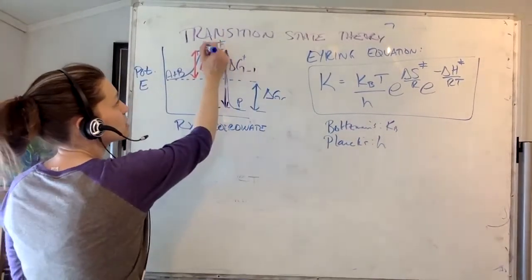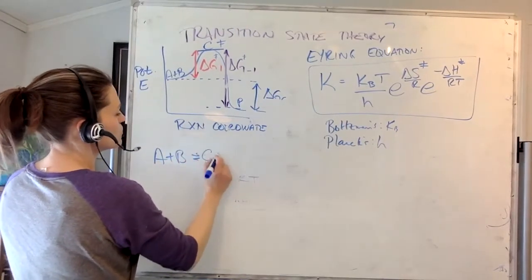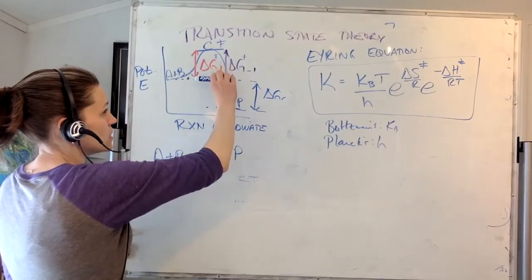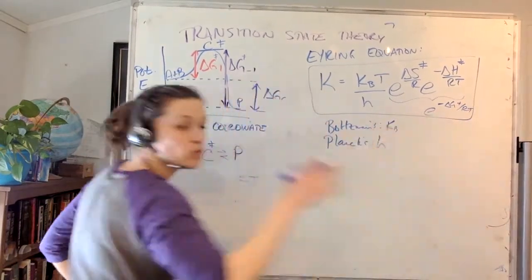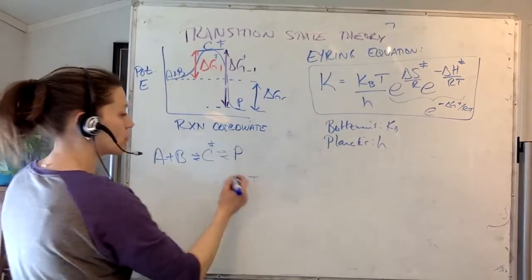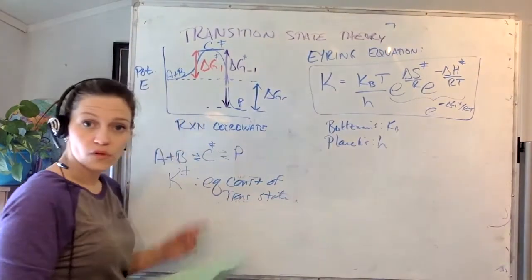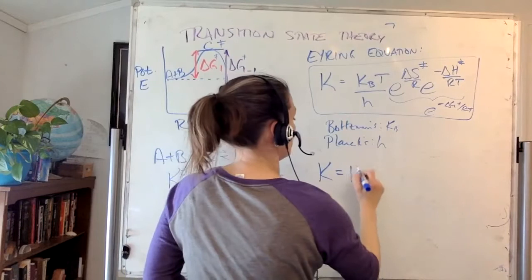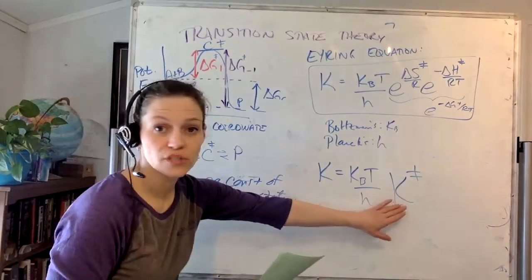If I approach this, let's call the activated complex C. The energy of C is the transition state. I can say A plus B is in equilibrium with C, which is in equilibrium with the products. From that, I can say this becomes E to the minus delta G double dagger over RT — and that is the equilibrium constant of the transition state with A plus B, or the equilibrium of C to P. That equilibrium constant can then be incorporated into the rate constant: K equals kBT divided by H times K double dagger.